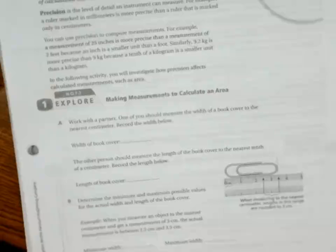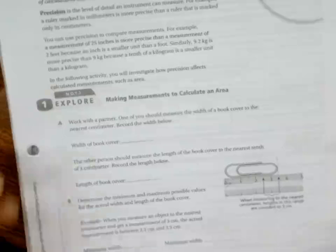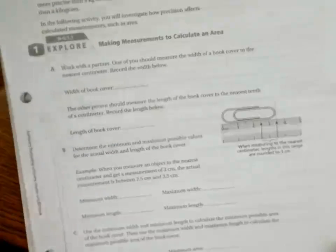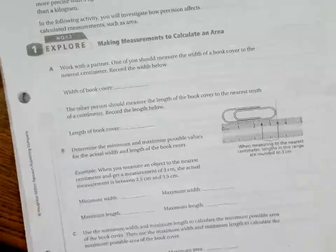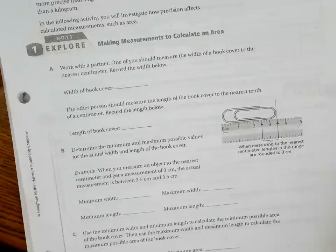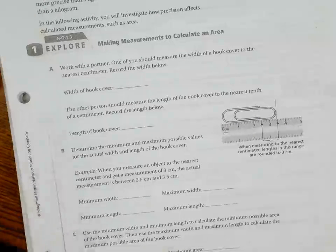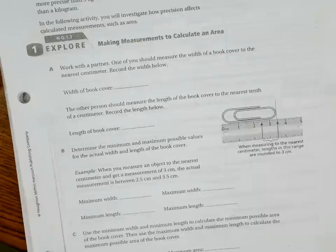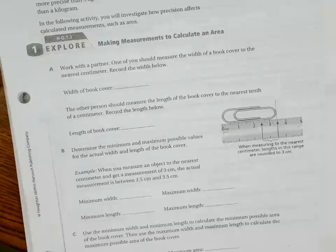In the following activity, you will investigate how precision affects calculated measurements, such as area. Making measurements to calculate an area. Work with a partner. One of you should measure the width of a book cover to the nearest centimeter. Record the width below. So I'm going to give you guys some rulers.